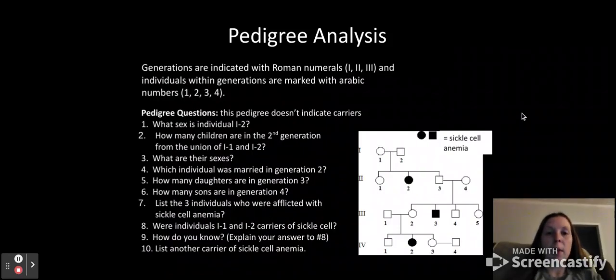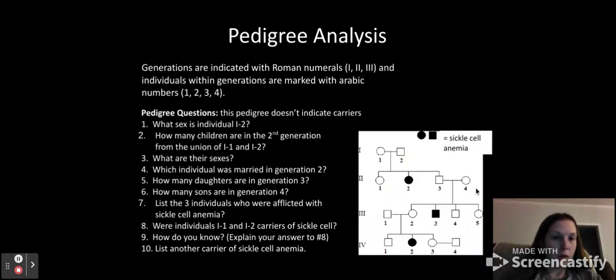All right. So pedigree analysis. Generations are indicated by the Roman numerals, one, two, or three. So we number those down the side. Within the generation are then marked with just regular numbers. So one and two. Basically, you write all the way across, left to right.